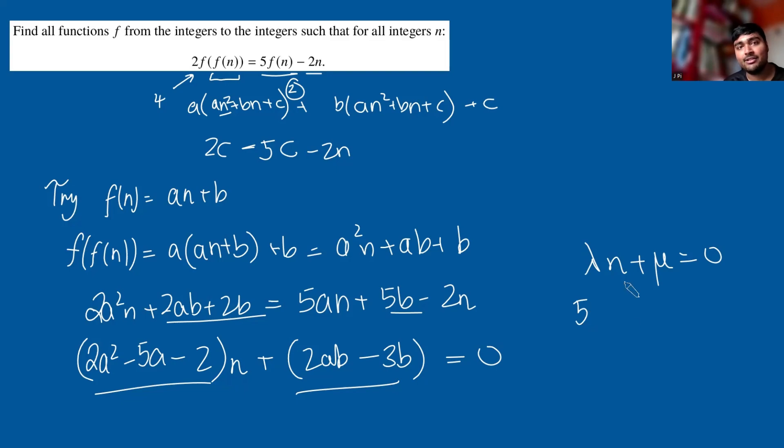If you're not convinced, let's show that λ must be zero. If λ is not zero, say λ is 5, then I could just make n a million, a billion, whatever, and eventually it will outweigh the μ and it won't be able to be zero. So λ certainly has to be zero. And once λ is zero, you must get that μ is zero as well. So λ and μ are both zero.